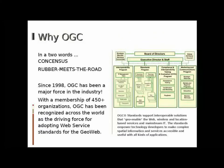So we know we need standards, but why OGC standards? Well, in two words: consensus and rubber meets the road. OGC, formed around 1998, is an industry consortium with 450 plus members in industry, government, and academia. It is a consensus organization, meaning its standards are developed by consensus among its members. Members discuss, debate, and argue about a standard until a consensus position is achieved, which is encapsulated in the form of a standard.